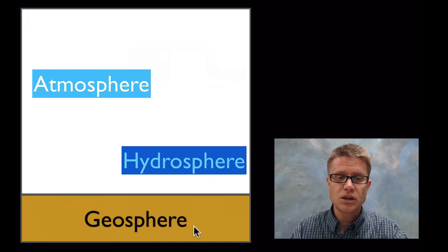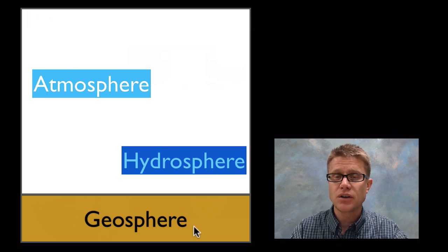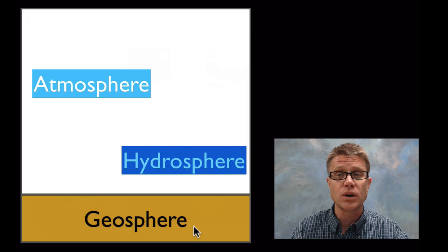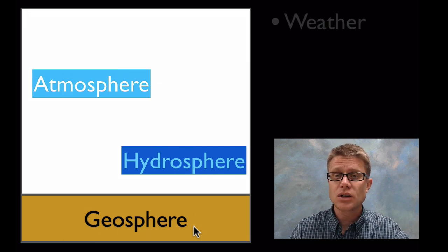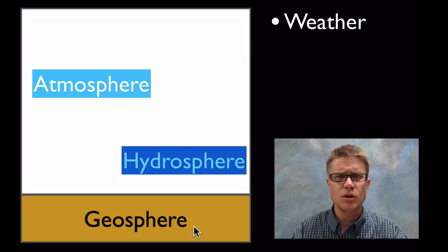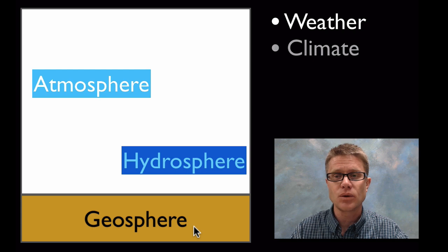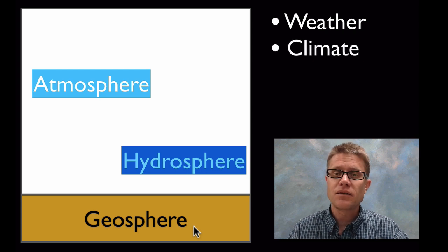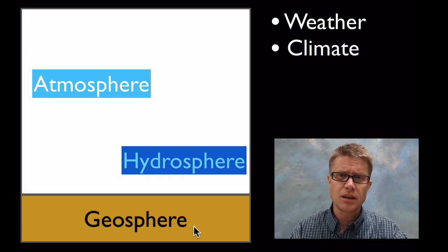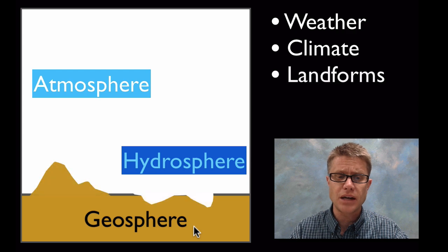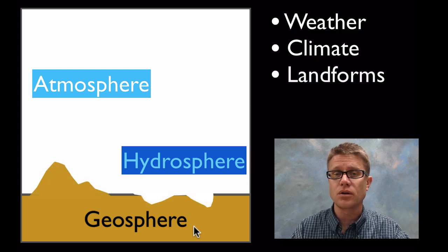If we look at where the geosphere, the atmosphere, and the hydrosphere interface with one another, all of those together create weather, which is what it's like today, and climate, what it's like over time. Eventually the atmosphere and the hydrosphere start to break down that geosphere and we get landforms forming.